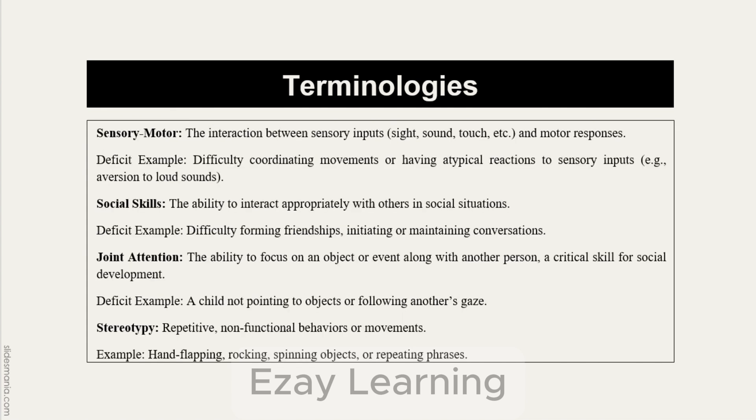Coming to sensory motor — by the name it is clear that it refers to the interaction and link between sensory inputs and motor responses. For example, if I hear a loud noise I would put my hand on my ears; that is a motor response to a sensory input. A deficit in sensory motor means difficulty coordinating movements or having atypical reactions to sensory inputs, for example aversion to loud sounds.